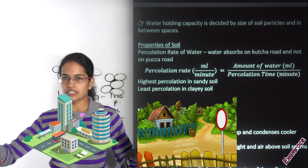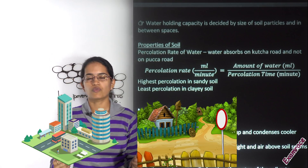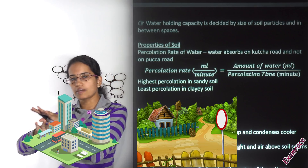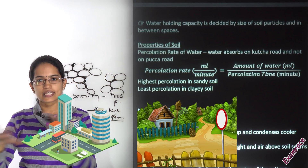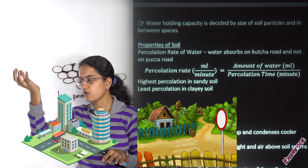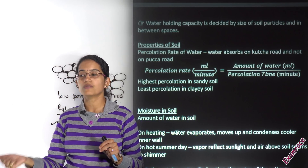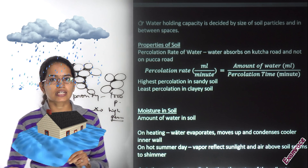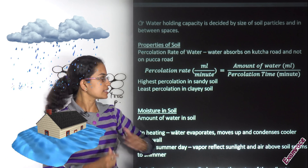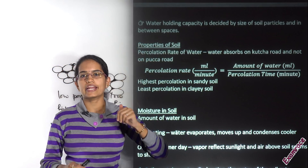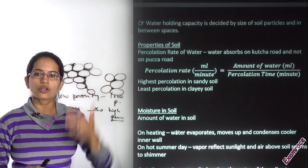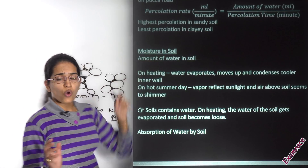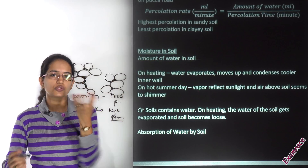In rural areas, a kaccha road allows water to easily penetrate down. In an urban area, a concrete or asphalt road prevents percolation, and in the rainy season you see flash flooding as a result of the lower rate of water absorption.